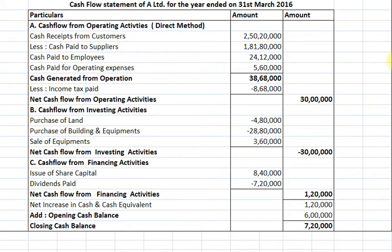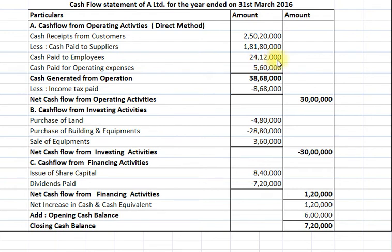Now finally we will prepare the cash flow statement of A Limited for the year ended 31st March 2016. Cash flow from operating activities under the direct method: cash receipts from customers Rs. 2,50,20,000. Less: cash paid to suppliers Rs. 1,81,80,000, cash paid to employees Rs. 24,12,000, cash paid for operating expenses Rs. 5,60,000. Cash generated from operations Rs. 38,68,000. Less income tax paid as per provision for tax account Rs. 8,68,000. Net cash flow from operating activities Rs. 30,00,000.